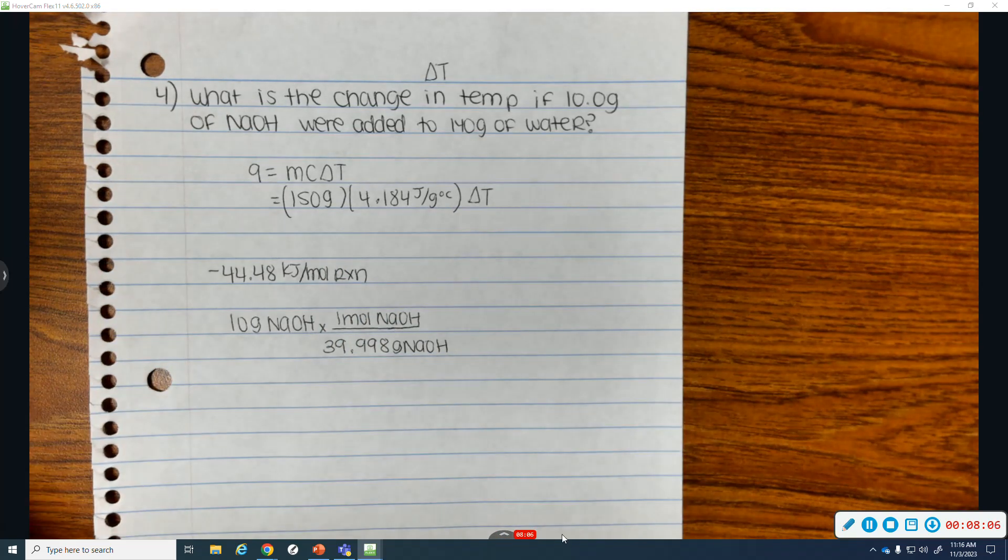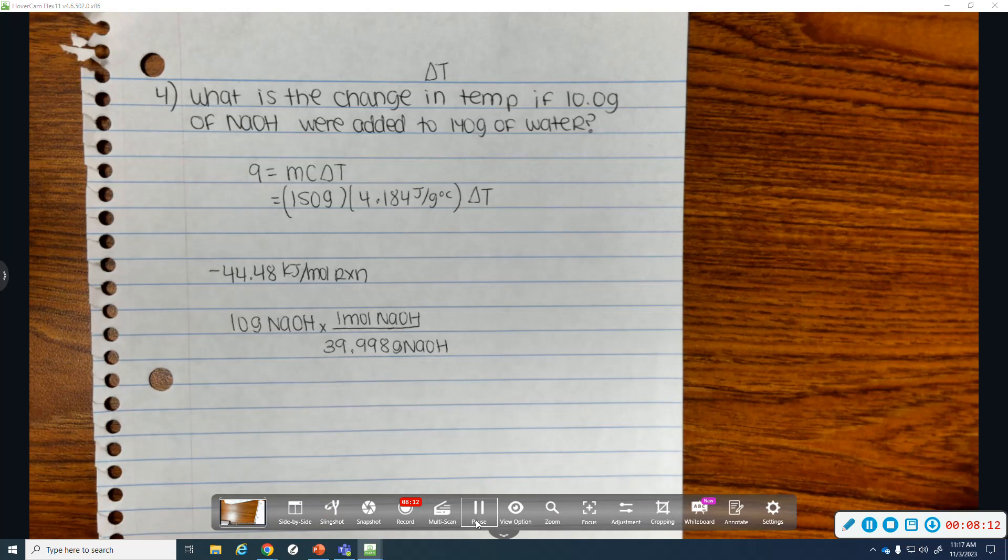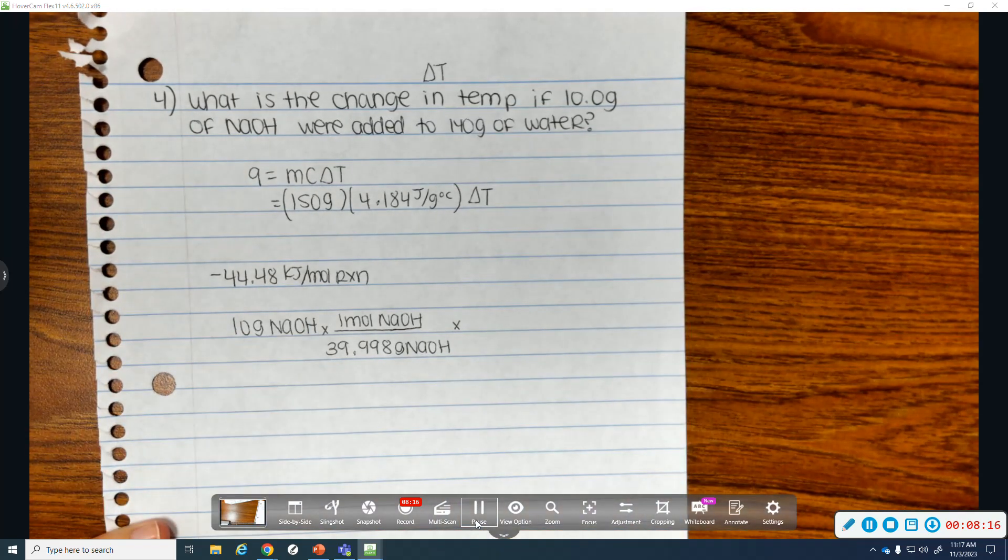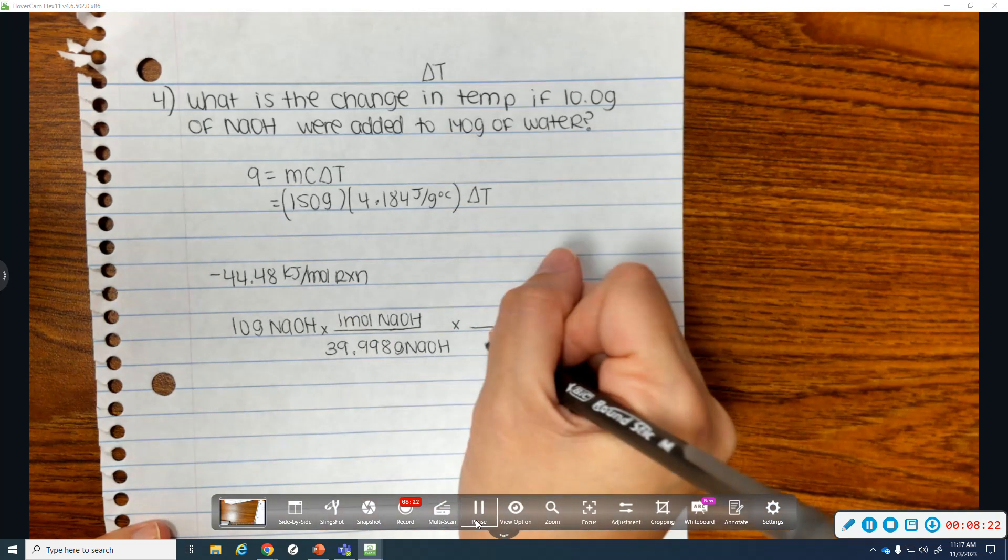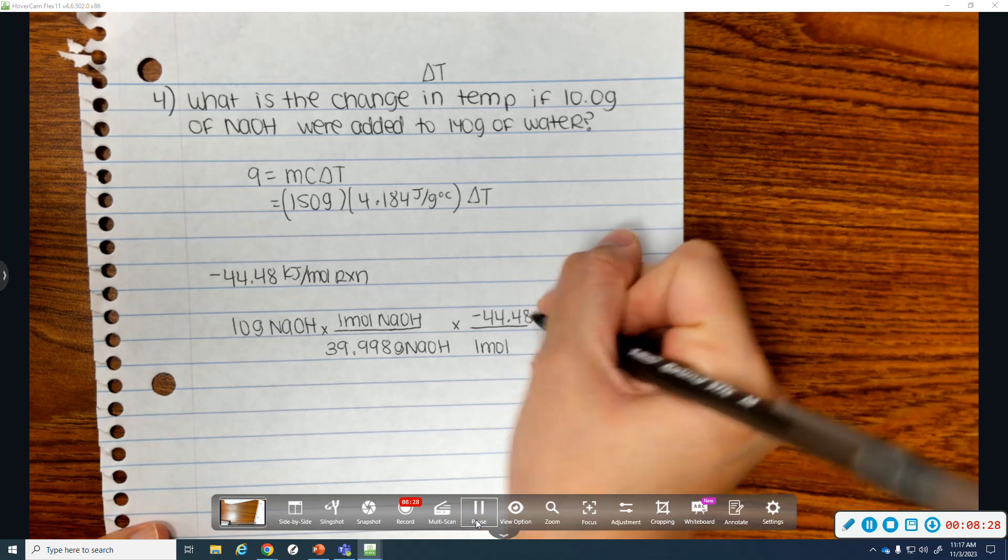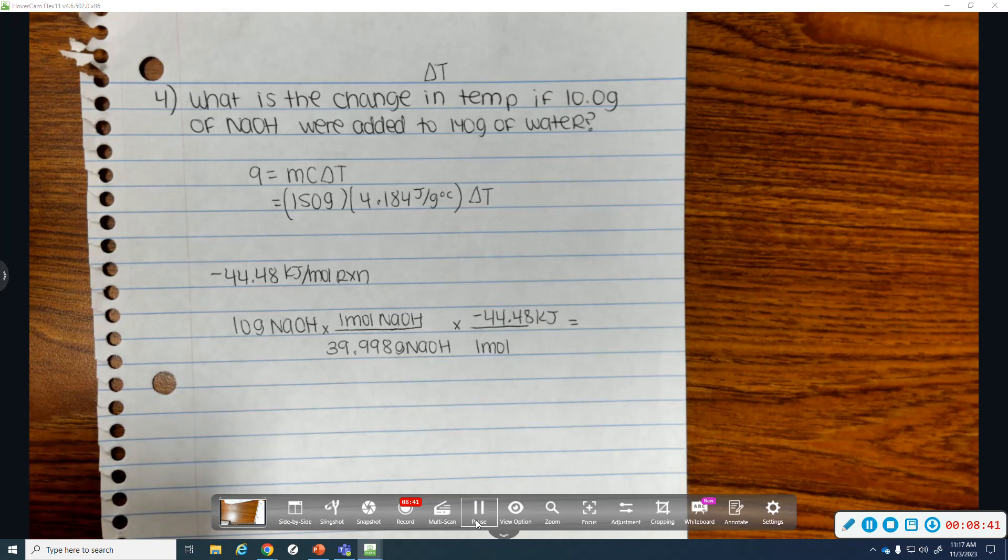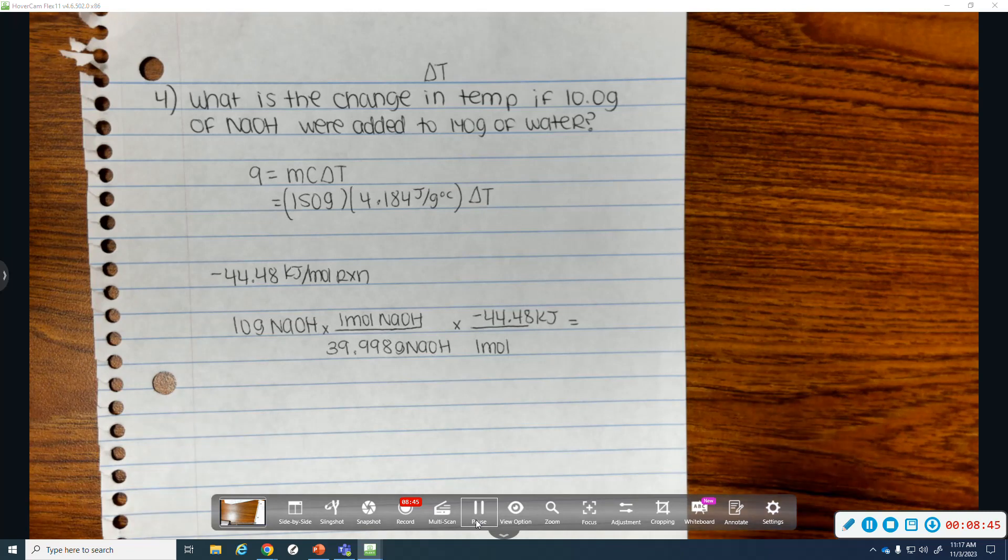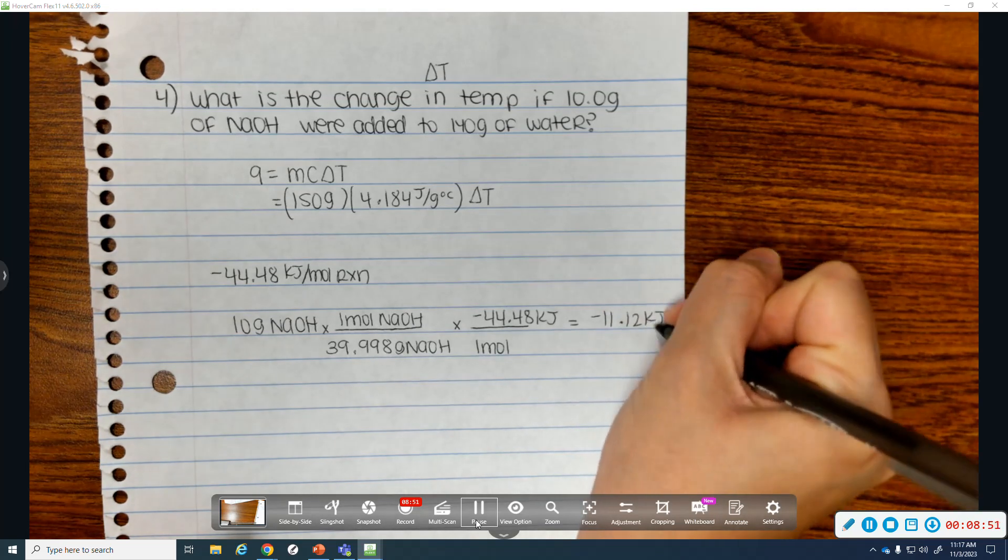Now, I need to use my enthalpy value in this dimensional analysis. So to add in my enthalpy value, pay attention to your units. It's negative 44.48 kilojoules per mole. And when units have to cancel, this is one mole. So one mole goes at the bottom. Negative 44.48 kilojoules would go on top. Now I have my heat value. So 10 times negative 44.48 divided by 39.998, that is negative 1.12 kilojoules.